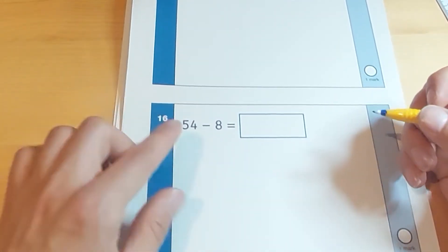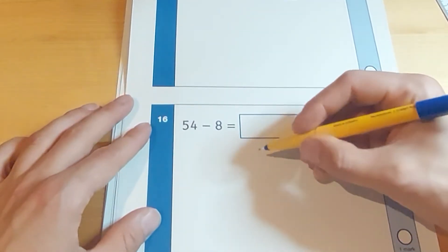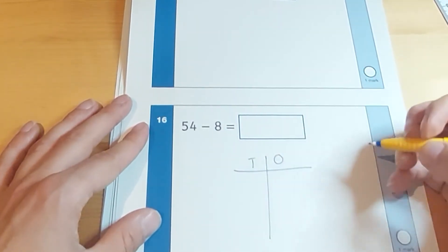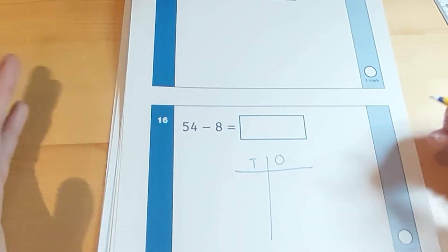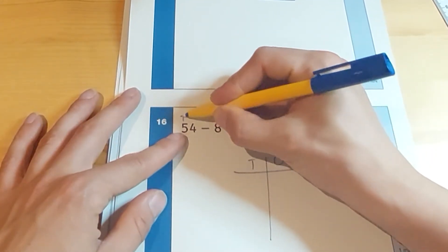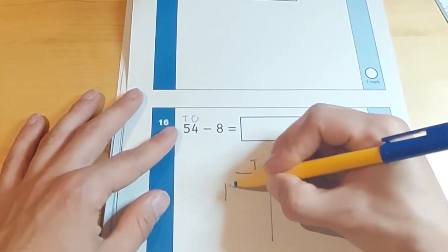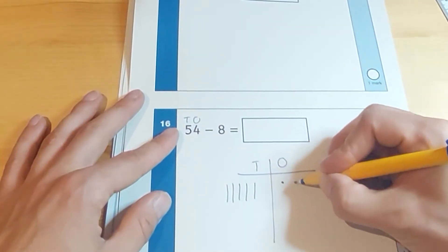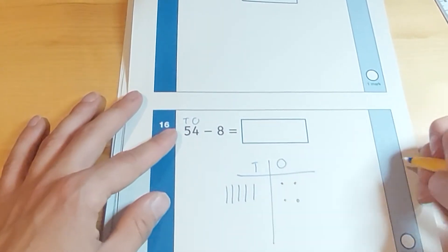This is interesting. It's the first question where we're going to have to borrow from the tens. So I'm going to draw out the grid again. Tens and ones. They could just count back 8. But if they can't count back 8 in their heads, it's another way of doing it. Draw the tens and then the ones first. So 10, 20, 30, 40, 50 and four ones.